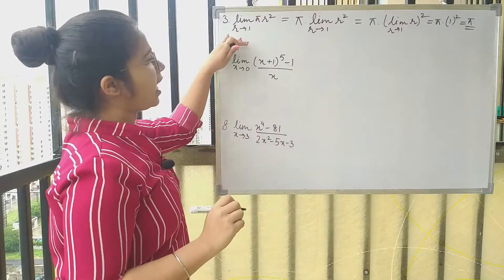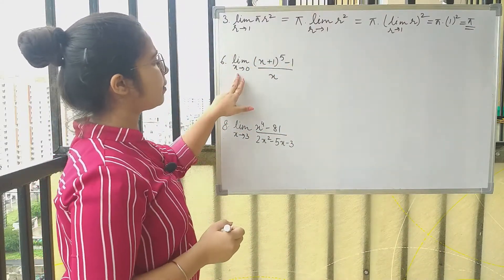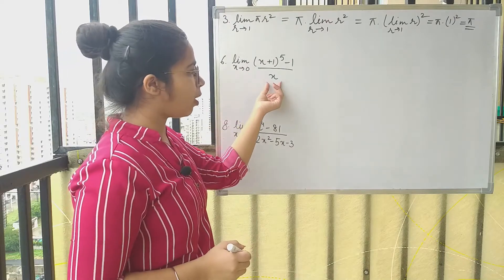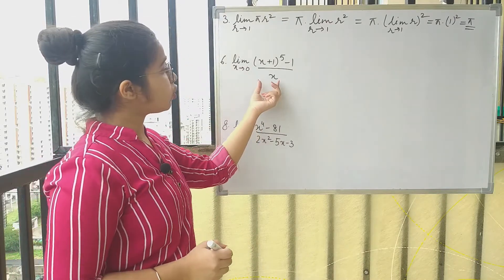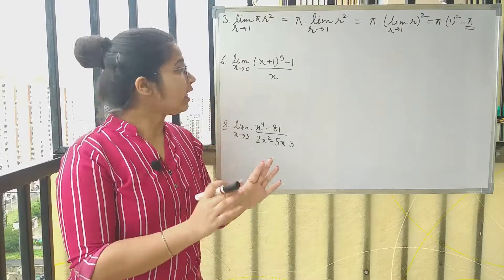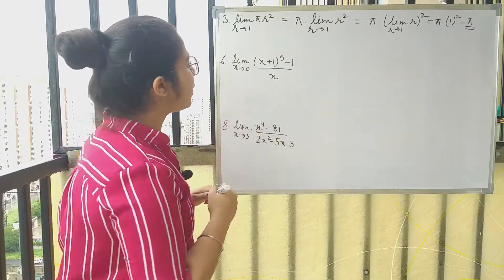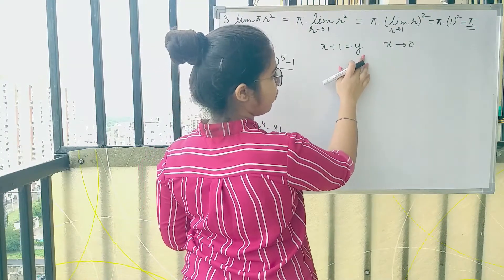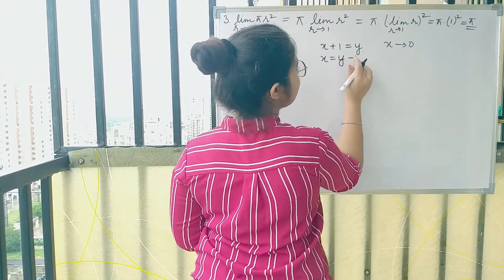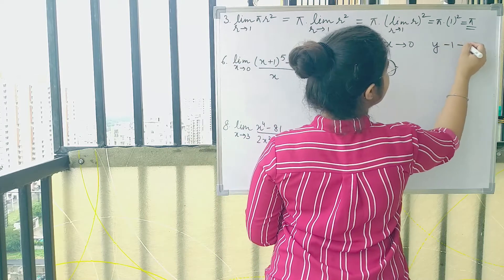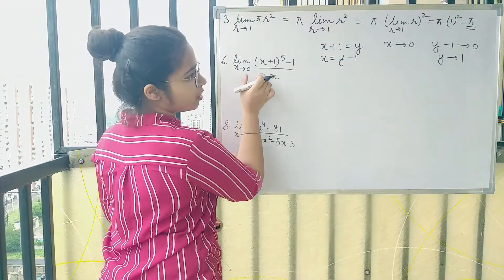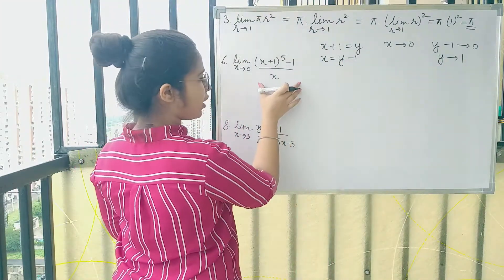Moving on to the sixth question, we have to find the limit of this particular function. If we look here, as x tends to 0 our denominator is also becoming 0, so the whole function is not defined. To fix this, let us take x + 1 to be y. As x tends to 0, x equals y − 1, which means y is going to 1. So our limit x tends to 0 will change to y tends to 1.